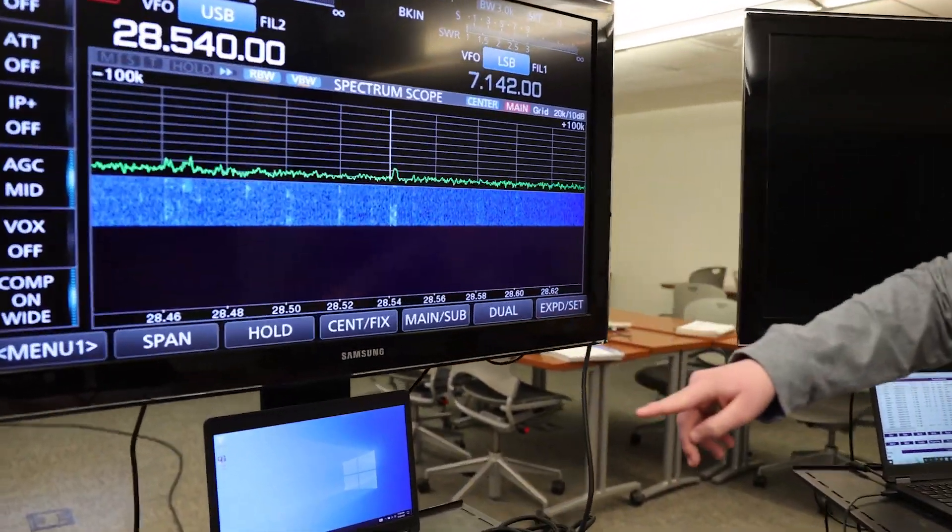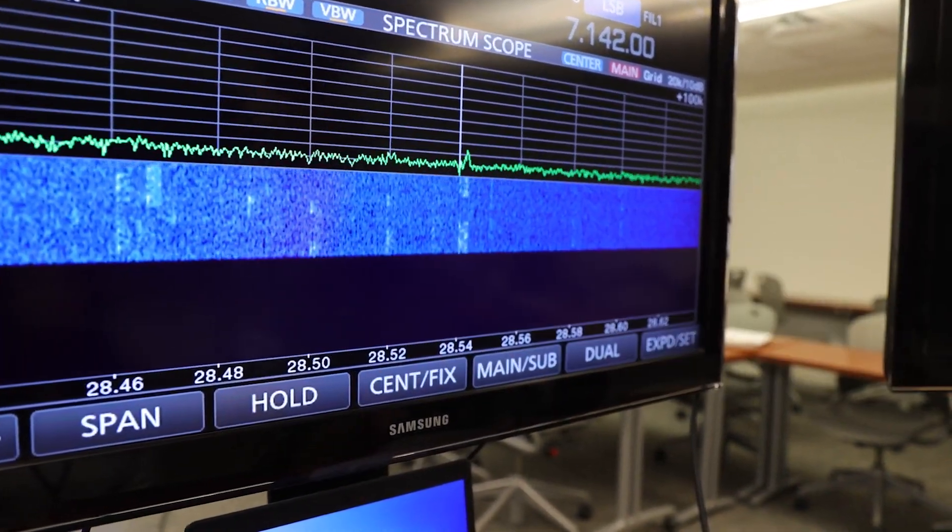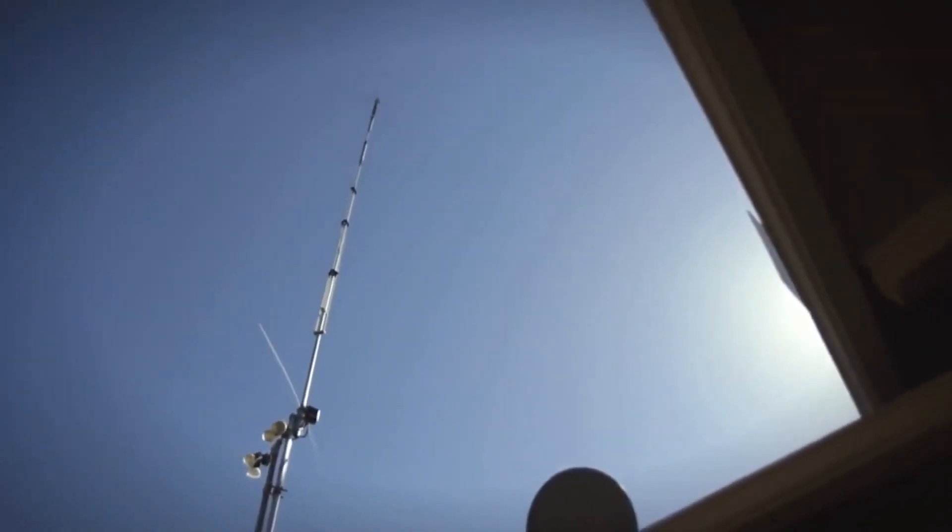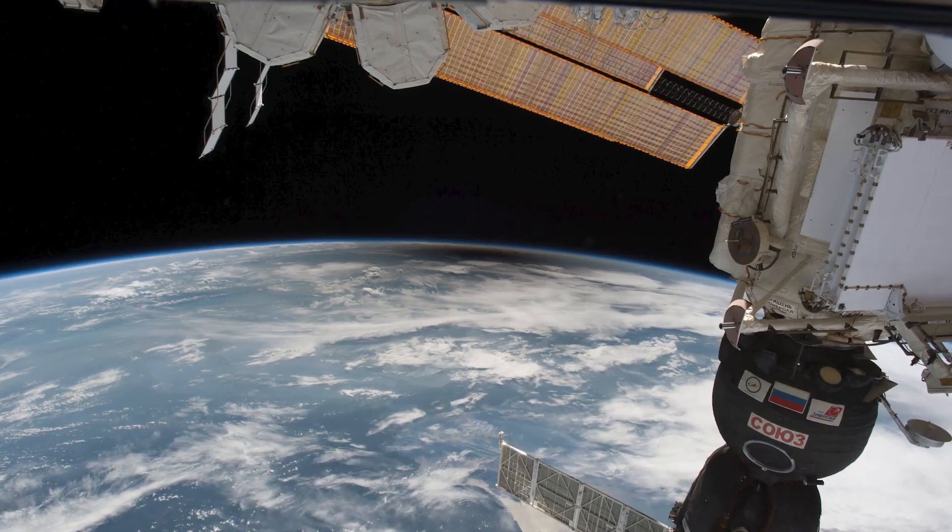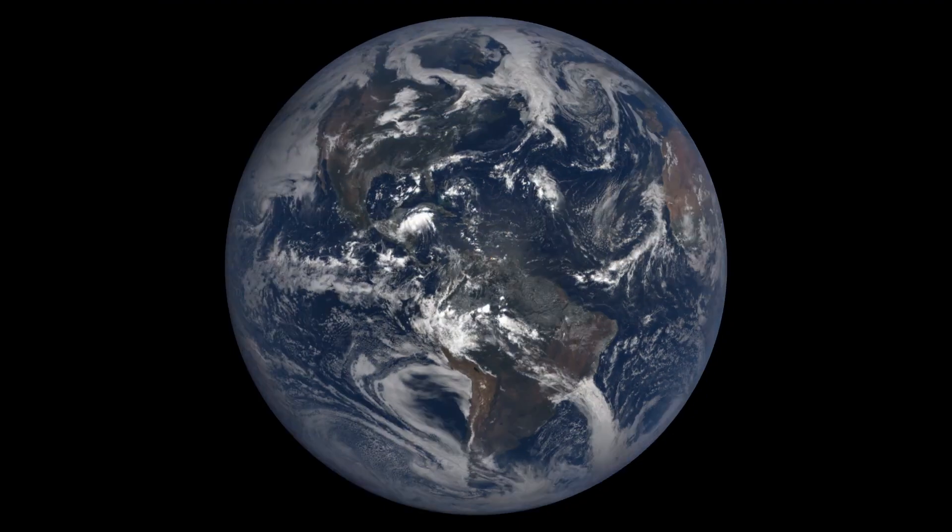By recording how strong their radio signals are and how far they go, ham radio operators and scientists can learn about how the ionosphere changes during solar eclipses.